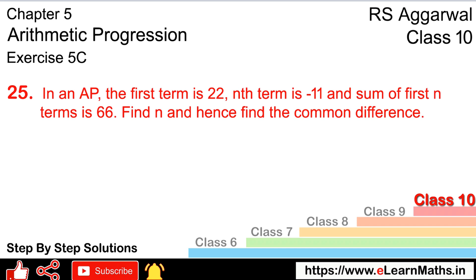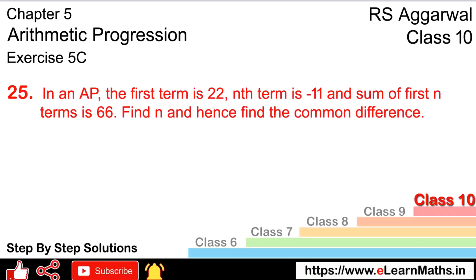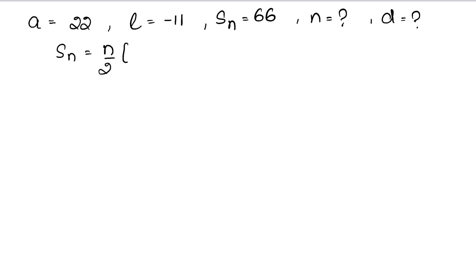Toh likh lete hain — humara first term, jise hum 'a' kehte hain, wo 22 hai. Humari nth term, yaani last term, wo hai minus 11. Aur sum of nth terms hai 66. Hume n nikalna hai aur common difference nikalna hai.